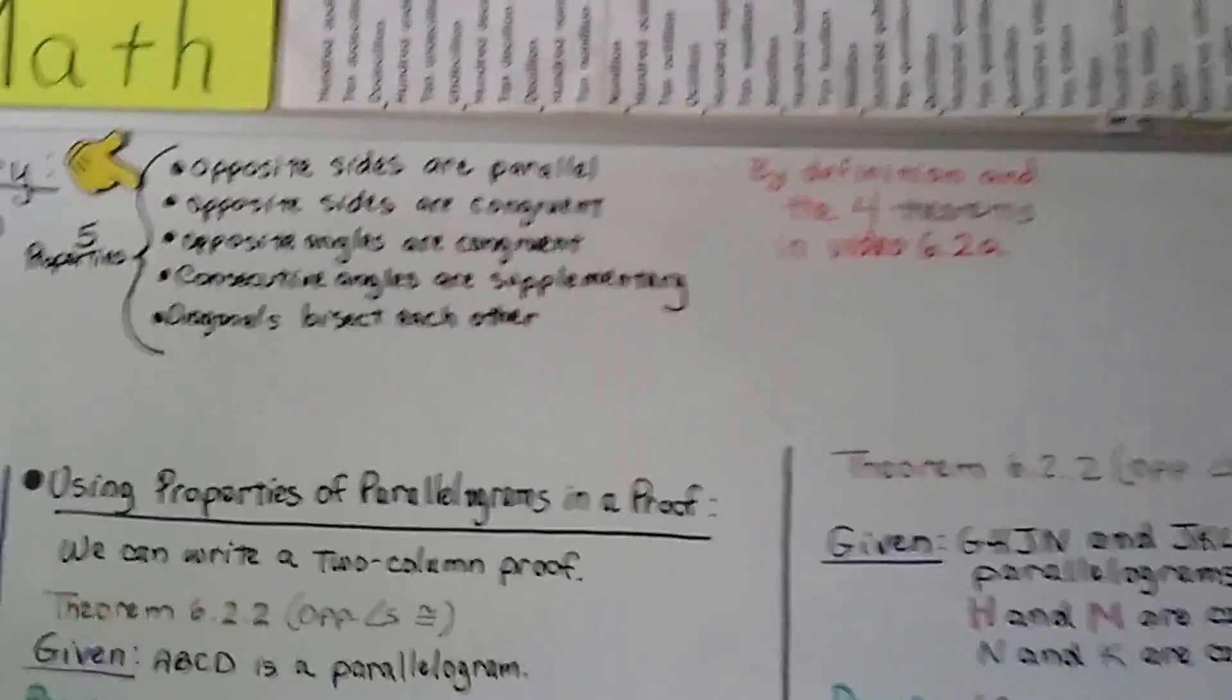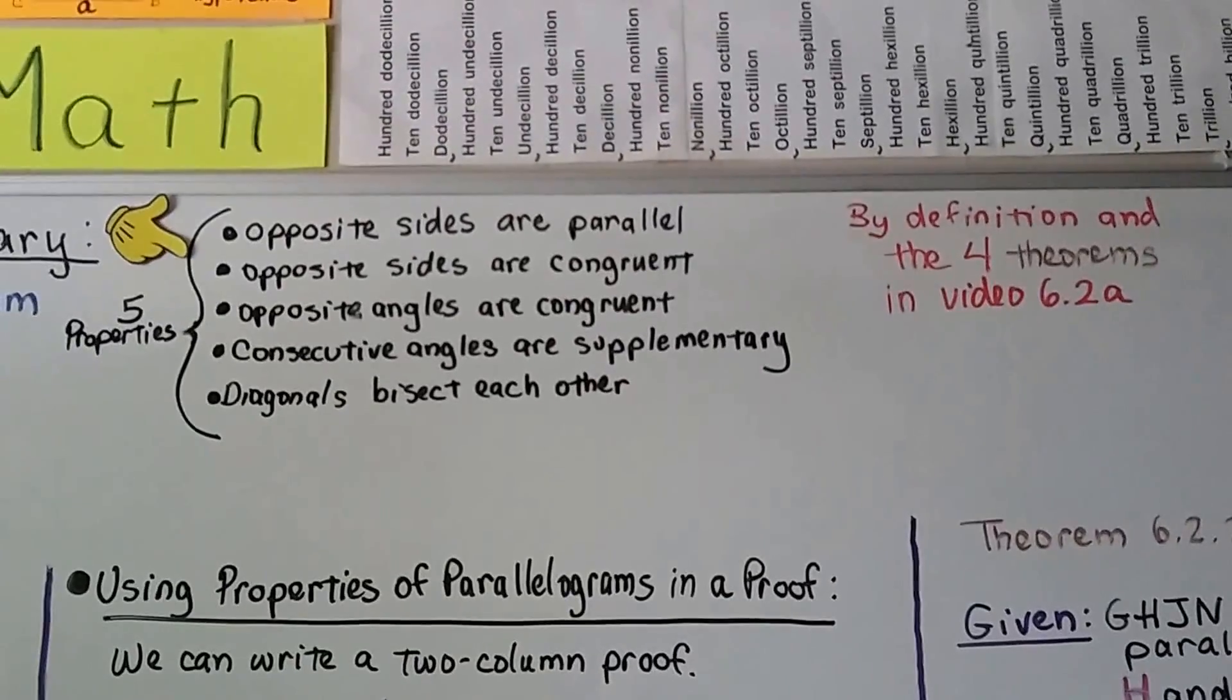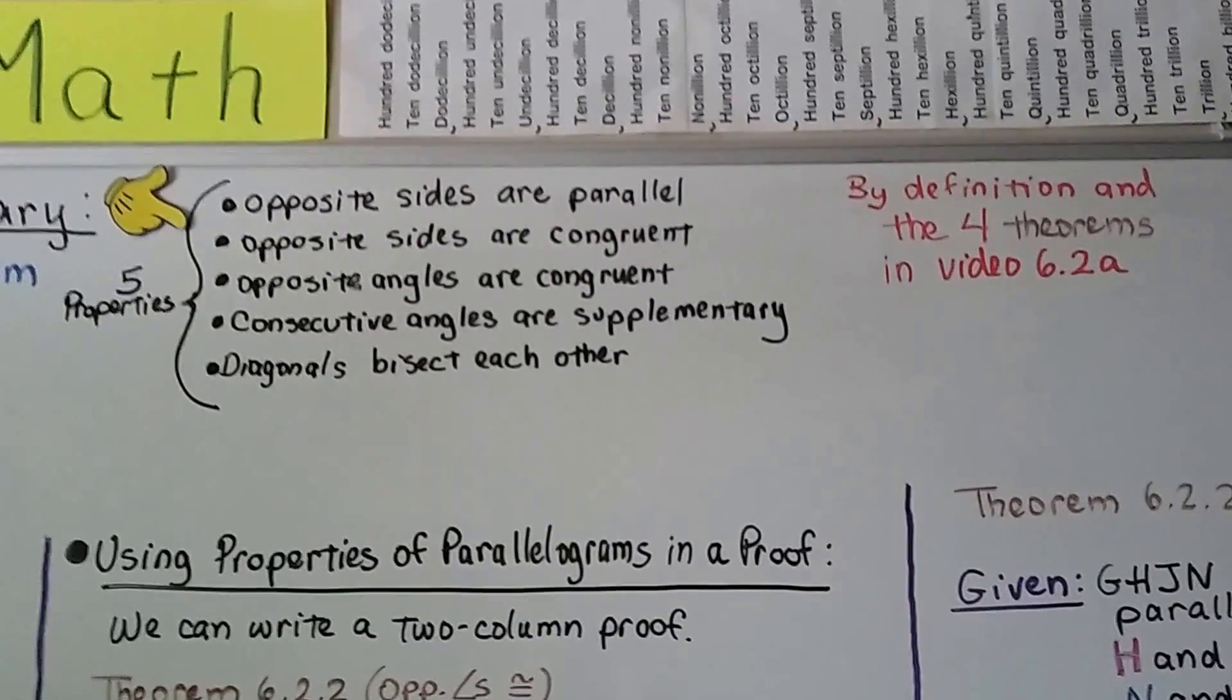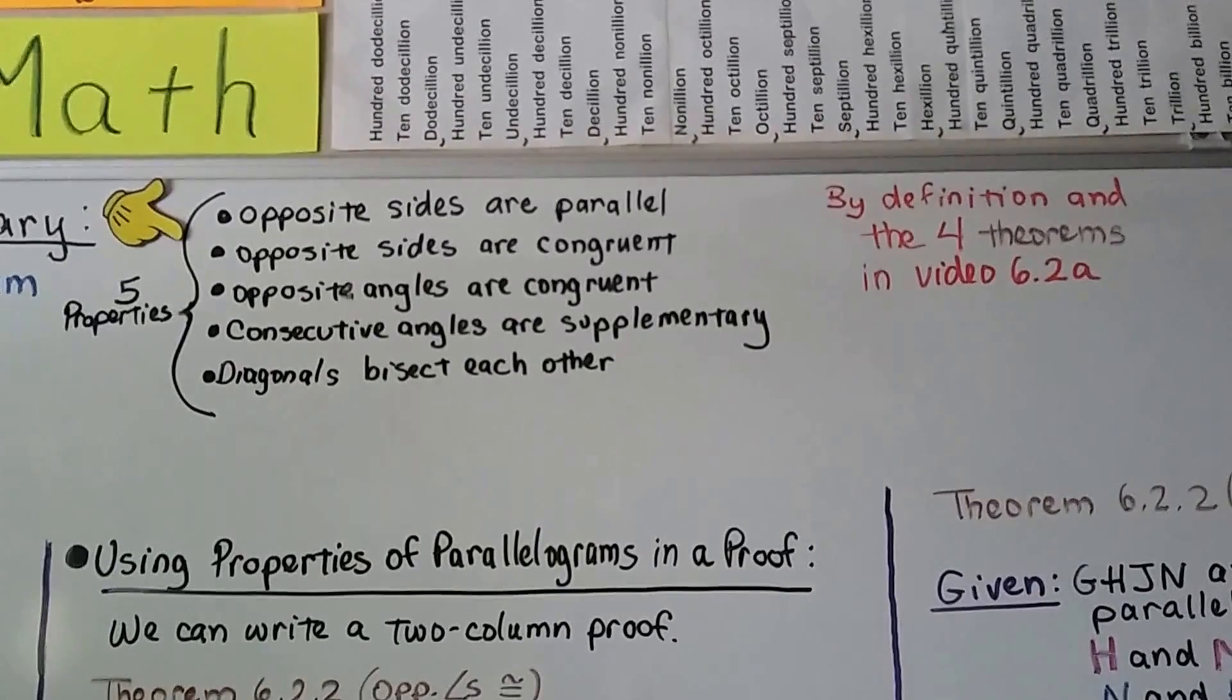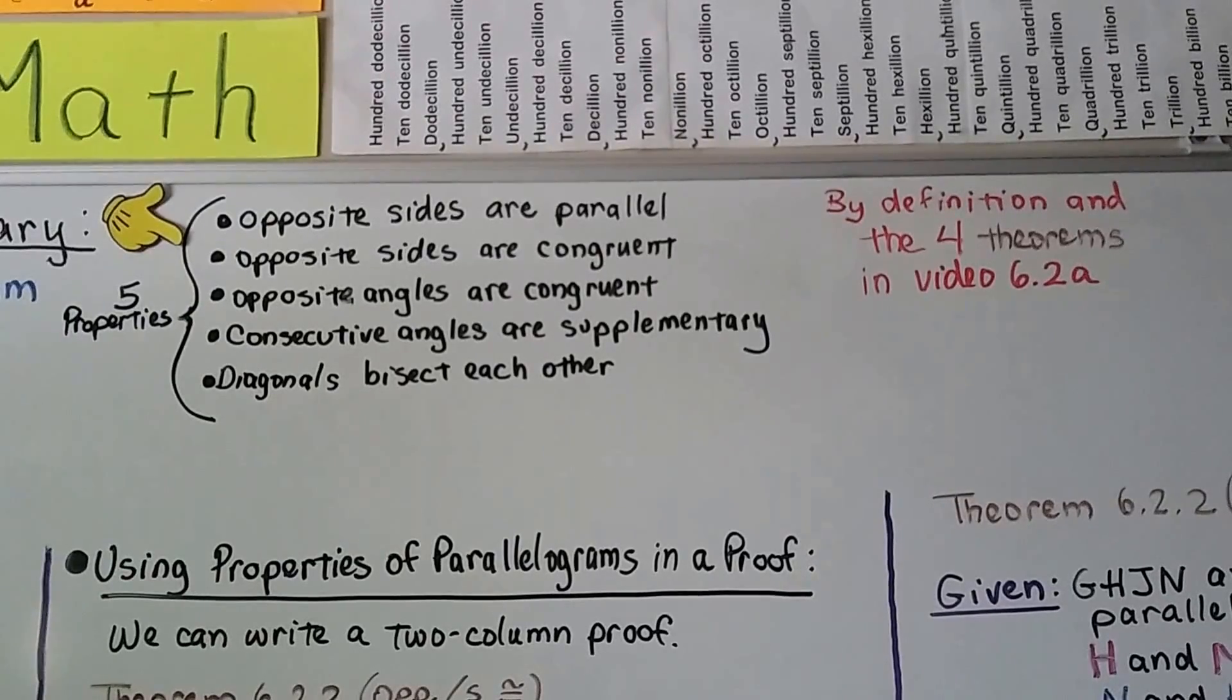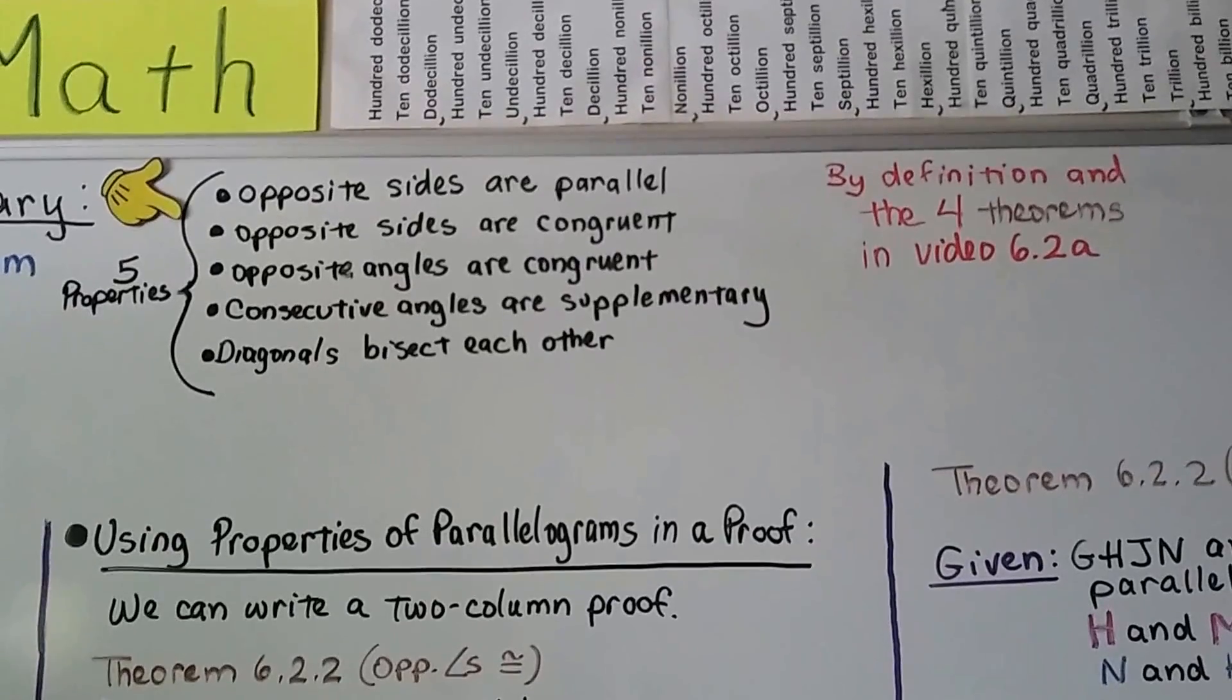So remember, by definition and the four theorems we did in 6.2a, the video before this, we have these five properties of parallelograms, and you should probably write them down. That opposite sides are parallel, opposite sides are congruent, opposite angles are congruent, consecutive angles are supplementary, you know, add up to 180 degrees, and diagonals bisect each other.